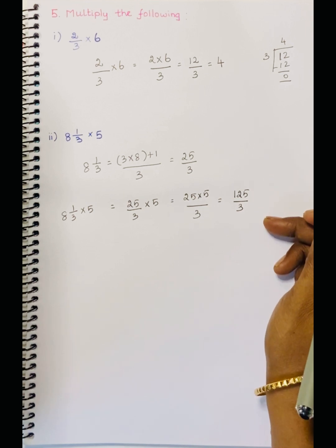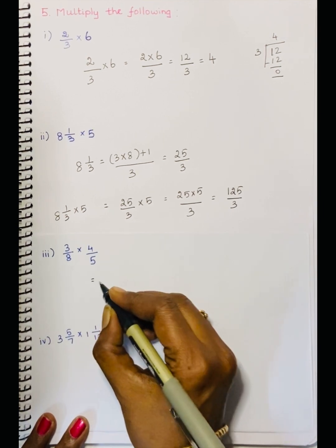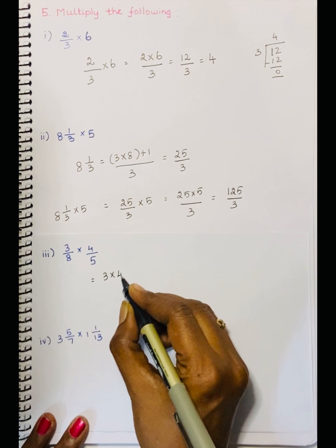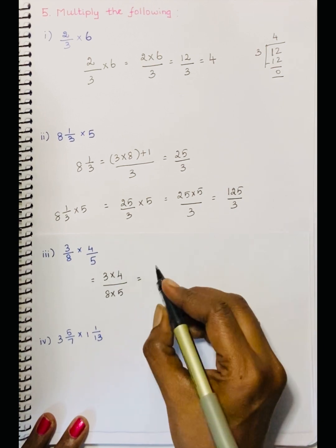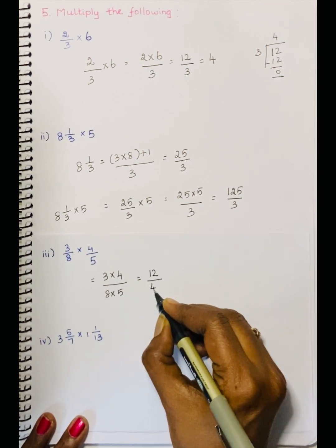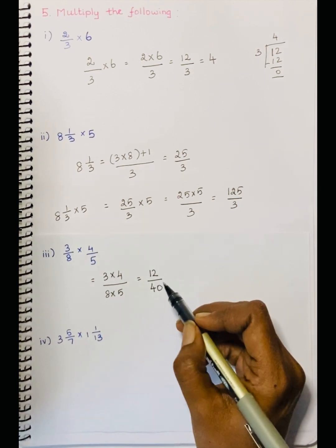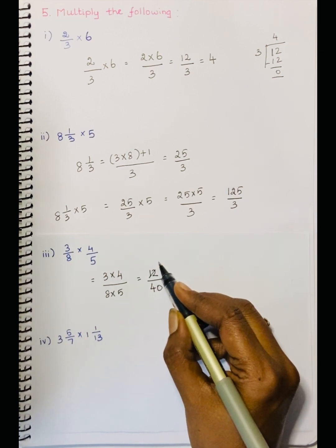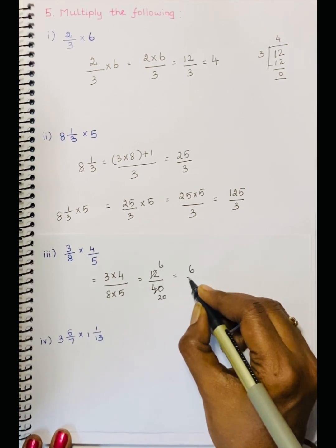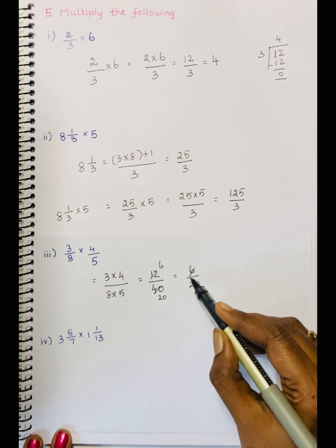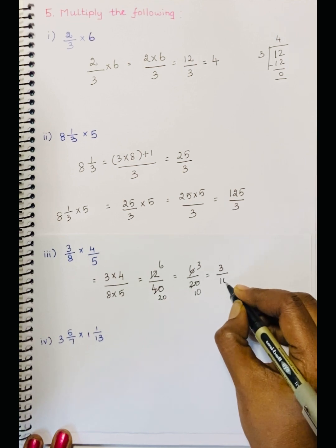25 into 5 is 125, so 125 divided by 3. You can divide by 3 tables or simplify. Next sum: 3 by 8 into 4 by 5 is equal to, numerator 3 into 4 divided by denominator 8 into 5, is equal to 12 divided by 40. Cancel using 2 tables: 6 times and 20 times, is equal to 6 by 20. Further cancel using 2 tables: 3 times and 10 times, is equal to 3 by 10.